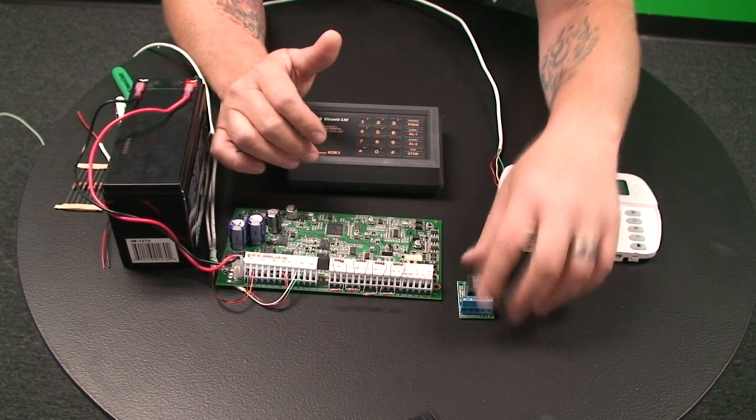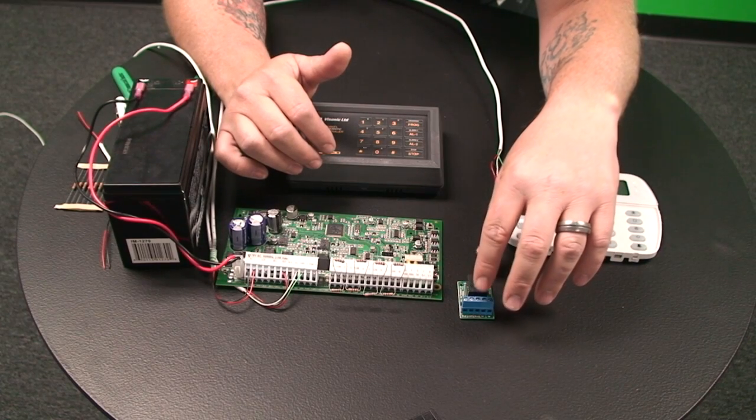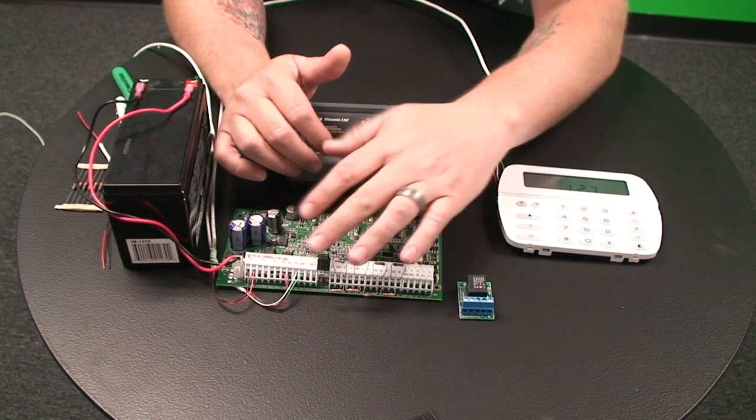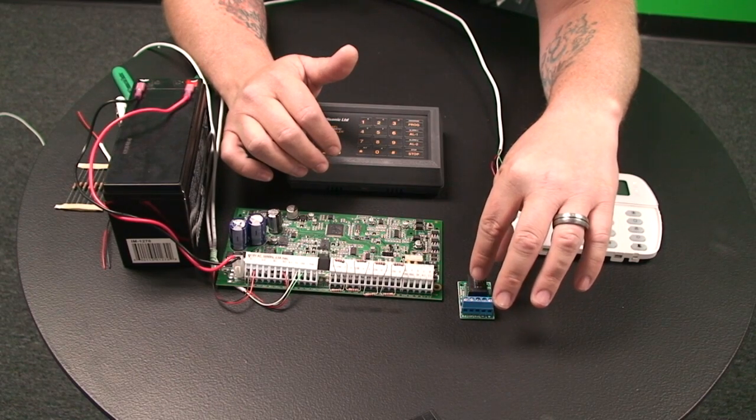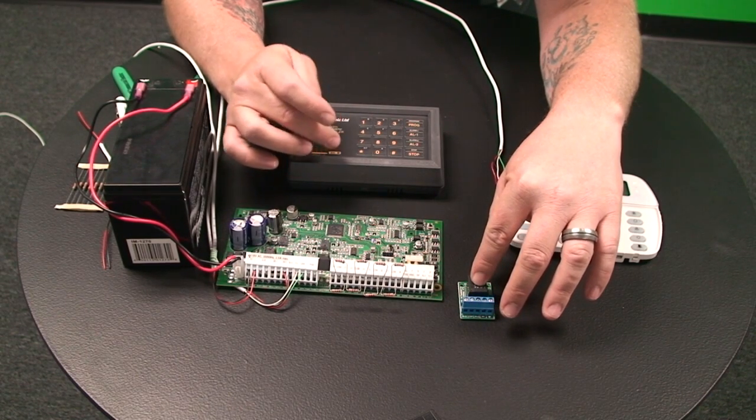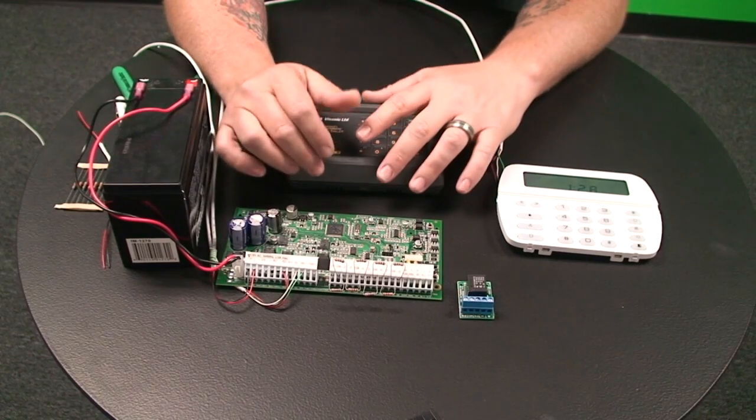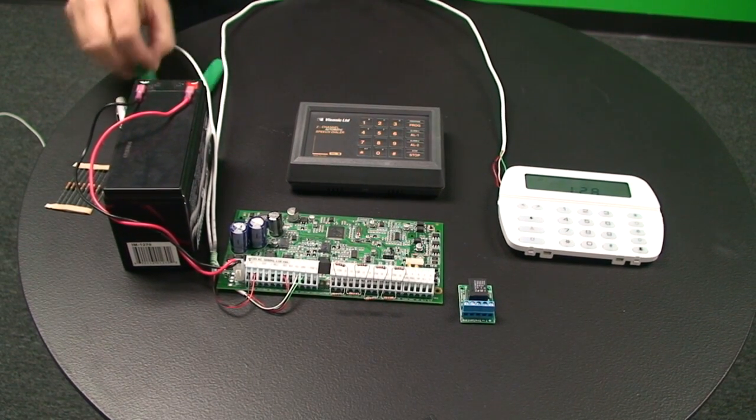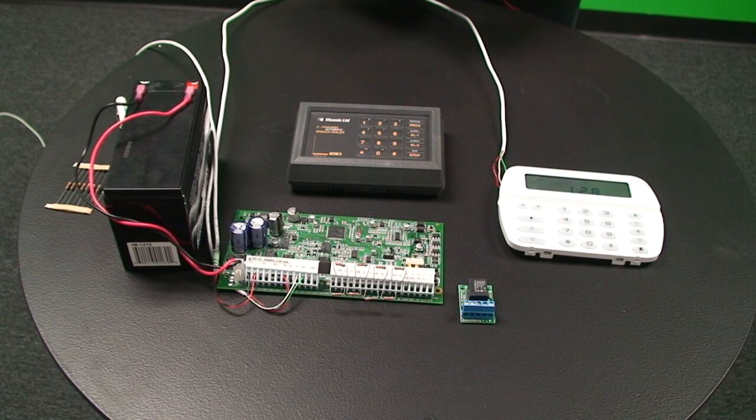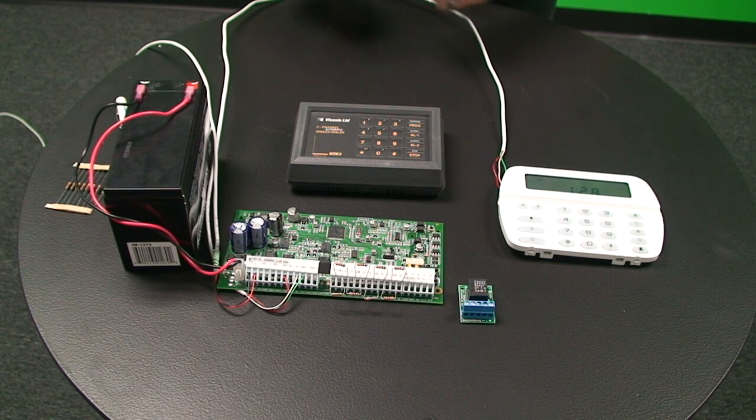So what this relay does is it'll be provided power from the control panel. When it does get its power it will give you a dry contact closure which will in turn trigger this dialer. We're going to start by hooking up this relay to the control panel, and this will be triggered by the bell circuit on the panel.